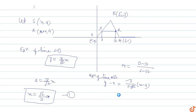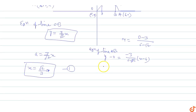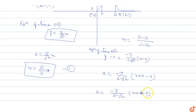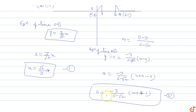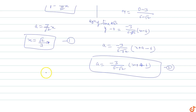Substituting the coordinates of R, (x + a, a), into the equation of line AB: a = [−3/(6 − √2)] × (x + a − 6). This is Equation 2. Solving for x from Equation 2: x = (√2 − 6)/3 × a + 6 − a.